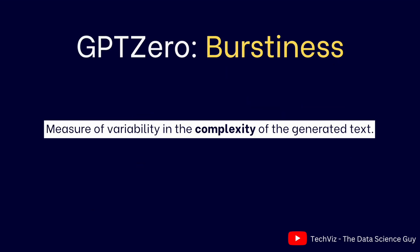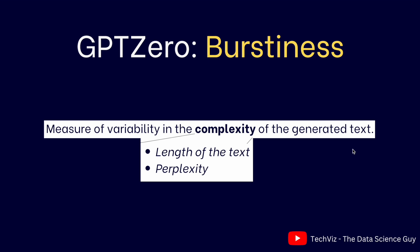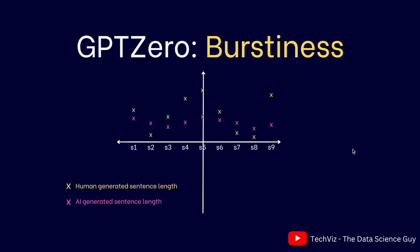The second method it depends on is burstiness. Burstiness is a measure of variability in the complexity of the generated text — this complexity could be the length of the text, the perplexity, and so on. For example, if we talk about length of sentence, the x-axis denotes S1 to S9 (nine sentences) and the y-axis denotes the length of each sentence. The yellow colored crosses represent human-written sentence lengths, while the pink colored crosses are lengths of sentences generated by AI. Visually, we can clearly see a lot of variance in the yellow crosses compared to the pink ones.